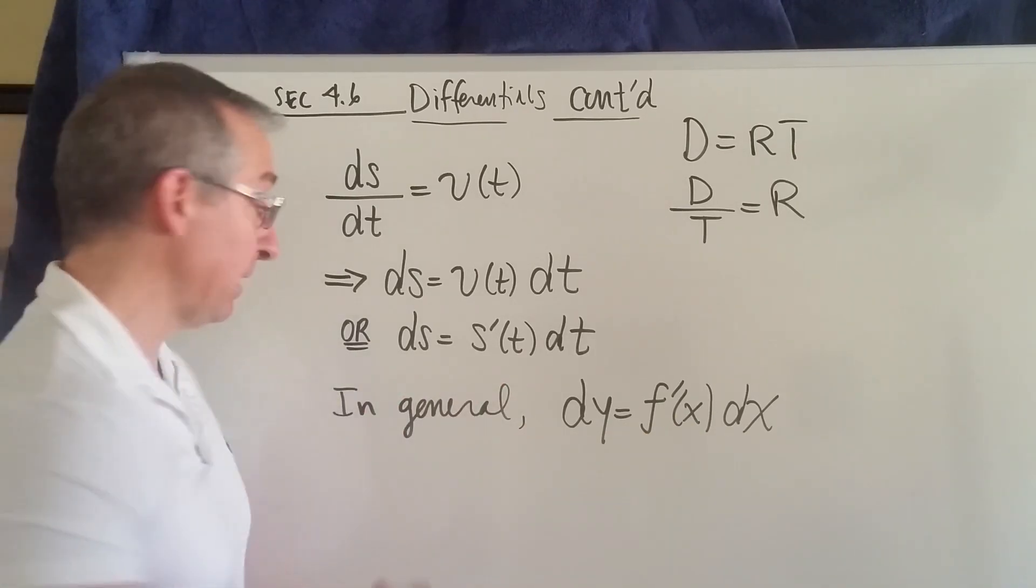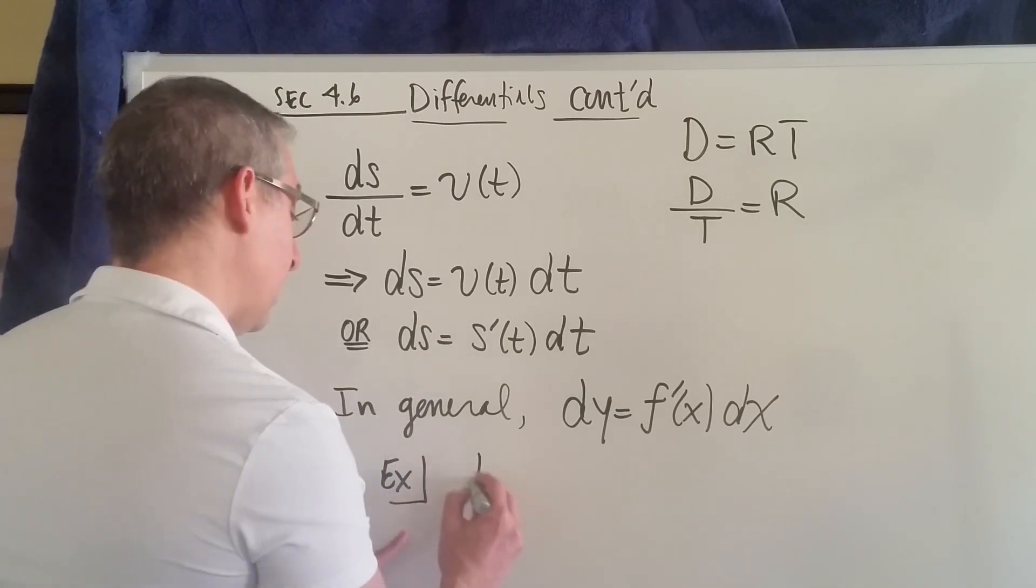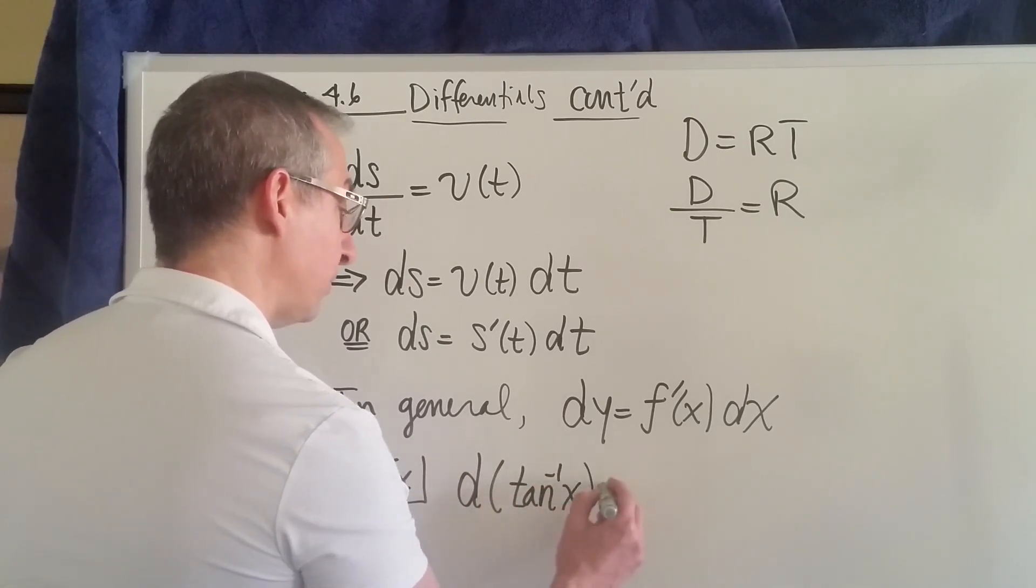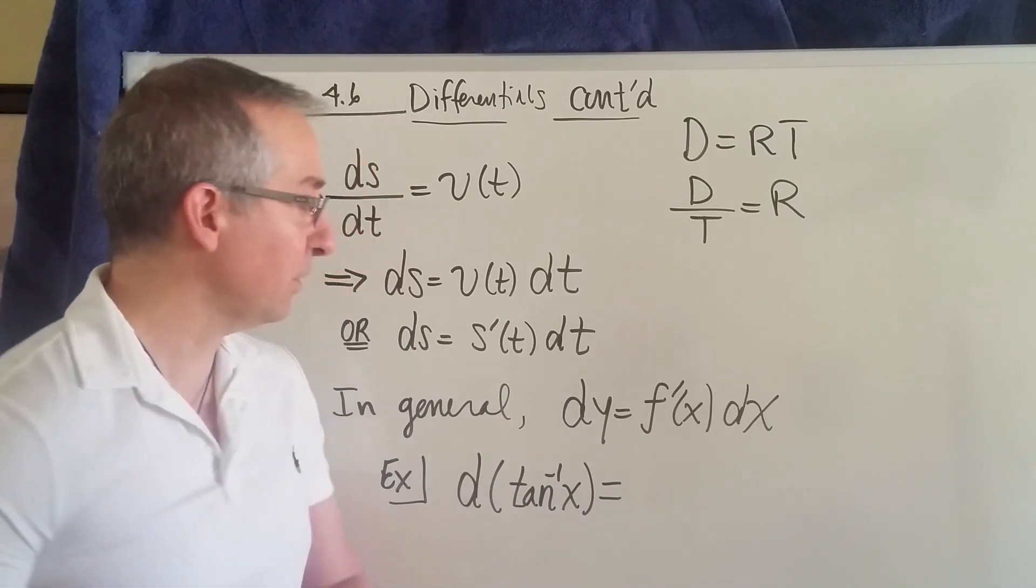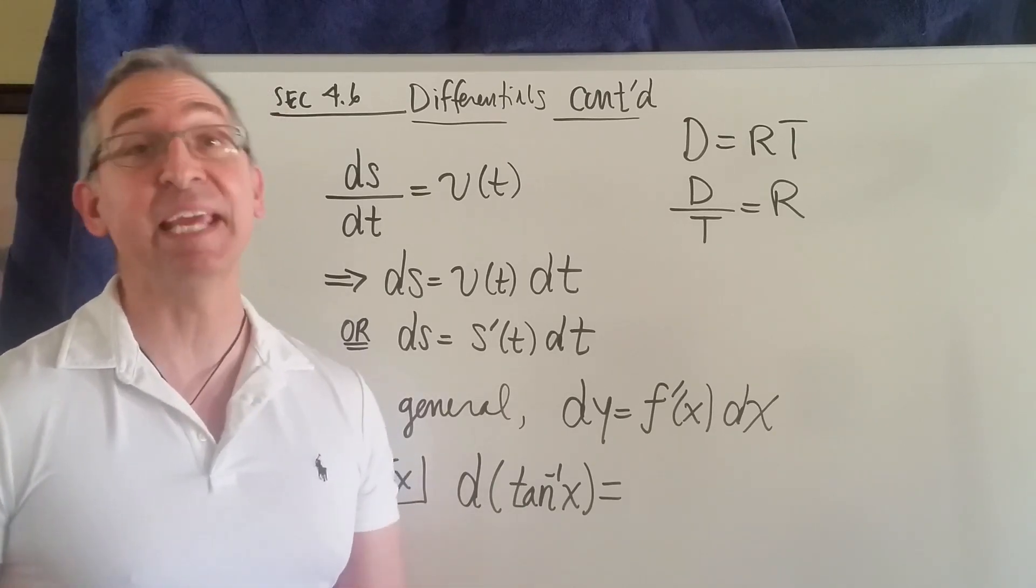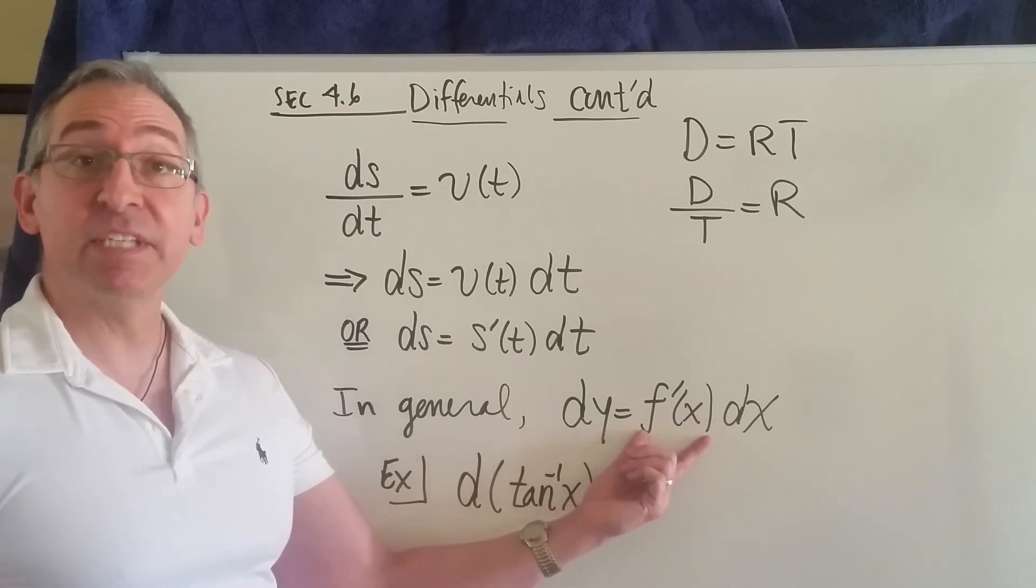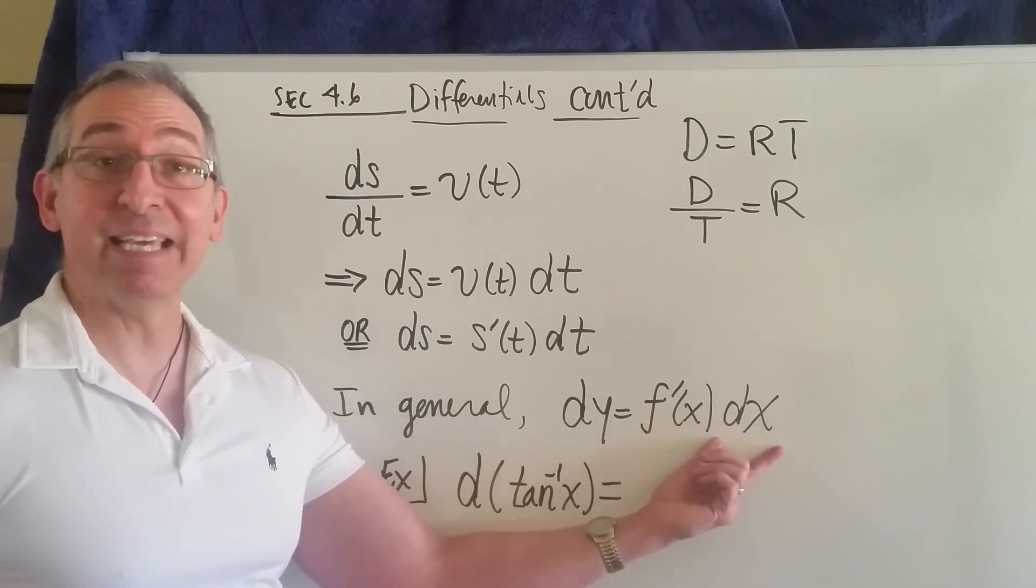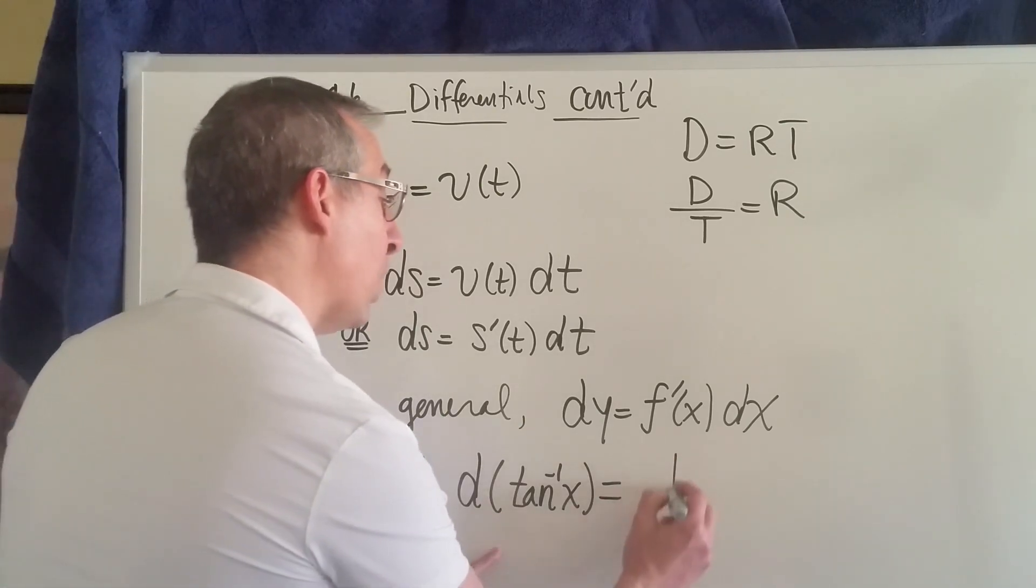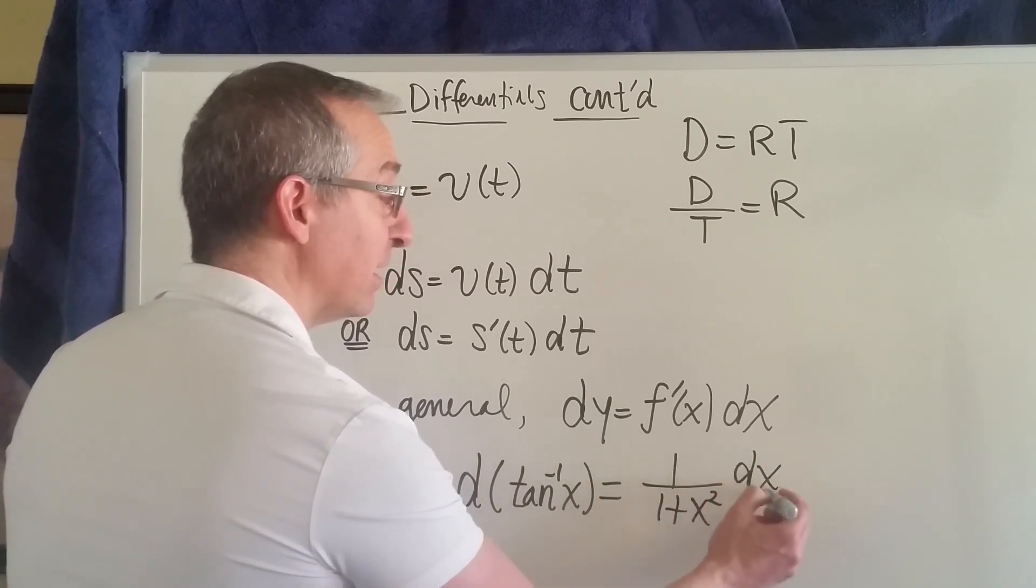So some examples. I'm going to apply this equation right here, and I want to apply it to the very specific function, the inverse tangent of x. Well, according to this, all I have to do is find the derivative of the inverse tangent, and then multiply it by dx itself. So the derivative of the inverse tangent function is 1 over 1 plus x squared, and then multiply that by dx.